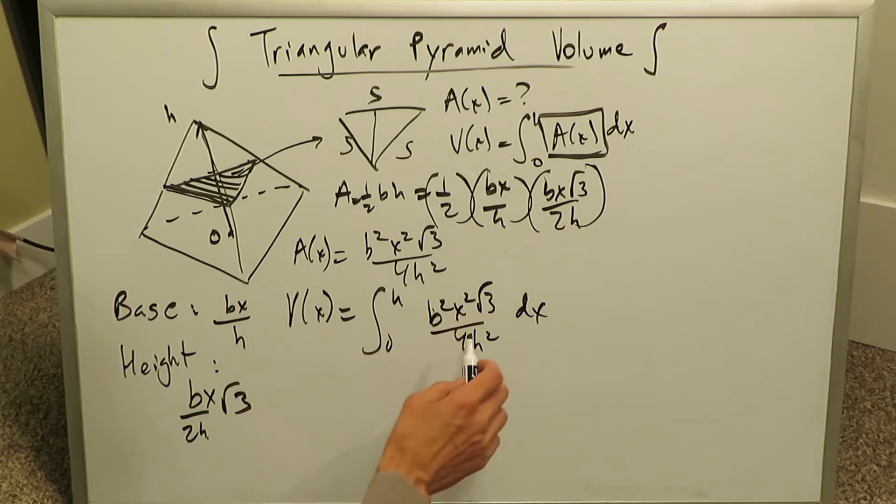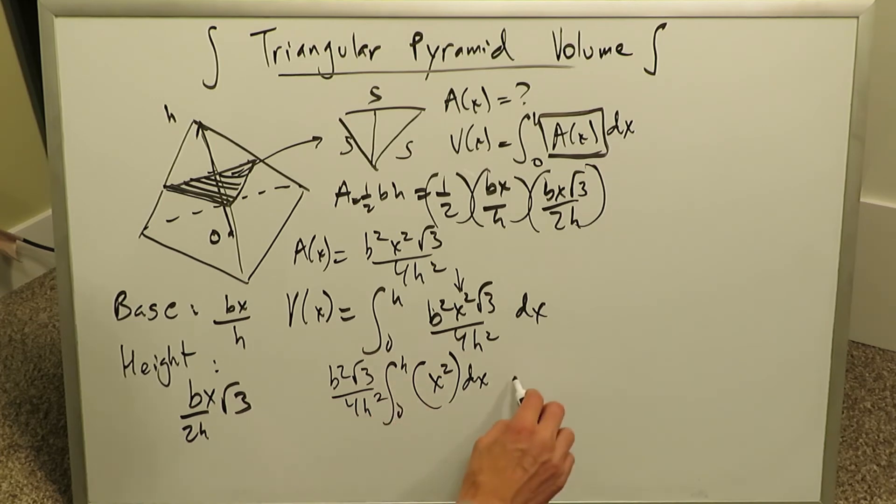We have B squared X squared root 3 over 4H squared. We have a bunch of coefficients which can come out. Everything is here with regards to this X component. We can bring out B squared root 3 over 4H squared from 0H up to X squared DX. This is what's going to integrate. So we have a lot of things which came out. You know the integration of this is easy. It's X cubed over 3.